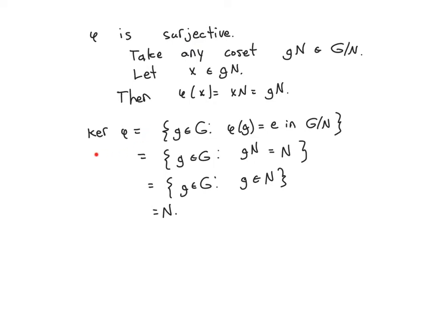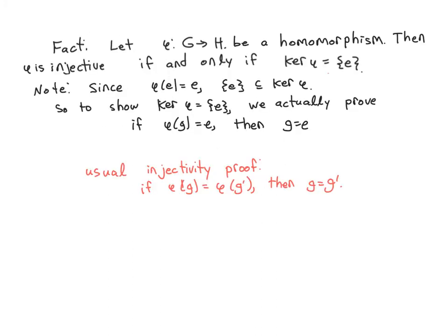It's not the only homomorphism with this property, but it's the only one up to isomorphism that's surjective. This illustrates the importance of normal subgroups — they're always kernels of homomorphisms — and quotient groups are the codomains of this construction. Another property of group homomorphisms is the following equivalent condition for injectivity: a group homomorphism is injective if and only if the kernel is the trivial subgroup.